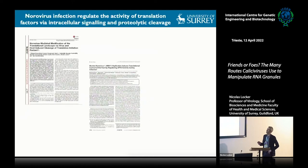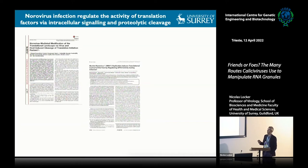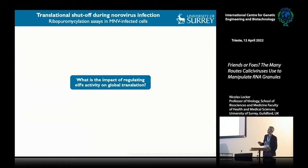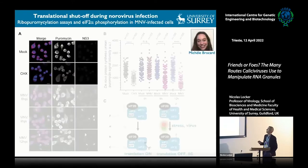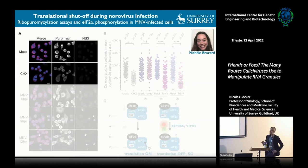When we started this work, we had done considerable prior work characterizing how murine norovirus modulates the activity of translation factors and protein synthesis. We showed that it regulated EIF4E activity and that the viral protease resulted in the cleavage of translation factors such as EIF3 subunits and EIF4G. What we didn't know was the impact of norovirus on the global level of translation.